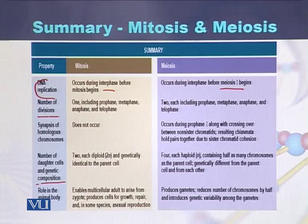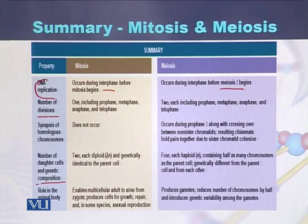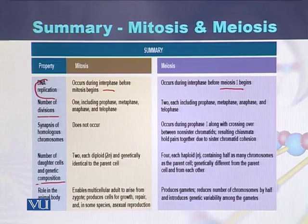Number of daughter cells and genetic composition: at the end of mitosis, two cells are produced, each diploid and genetically identical to the parent cell. While in case of meiosis, four cells are produced, each one is haploid, and the cells are not identical to the parent cell.